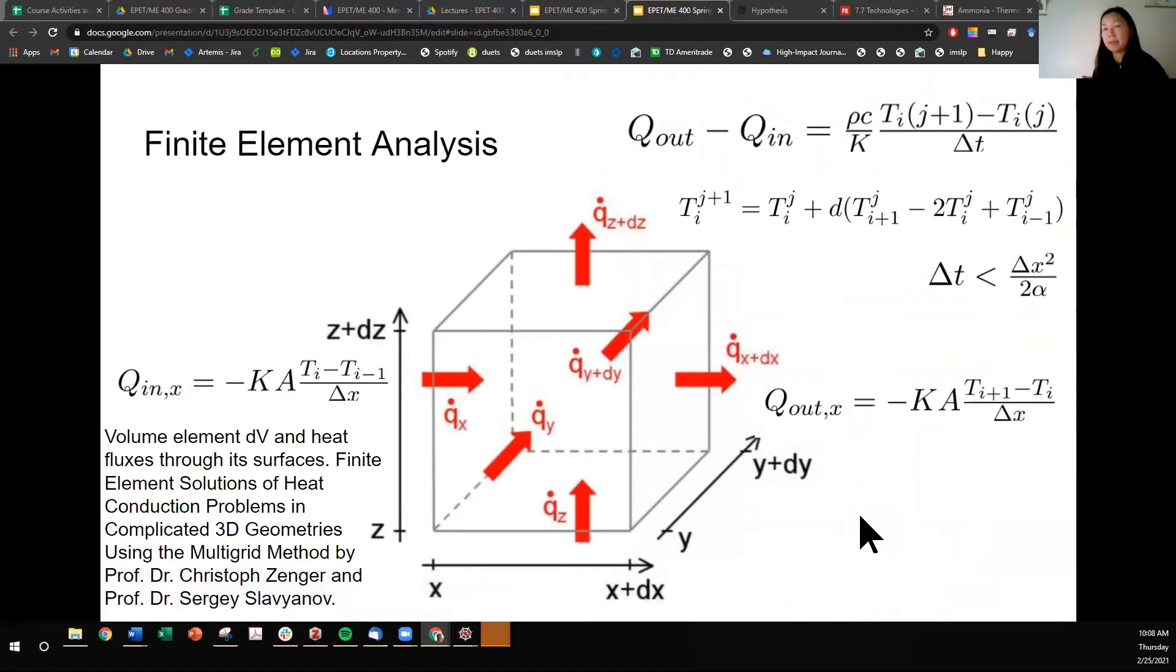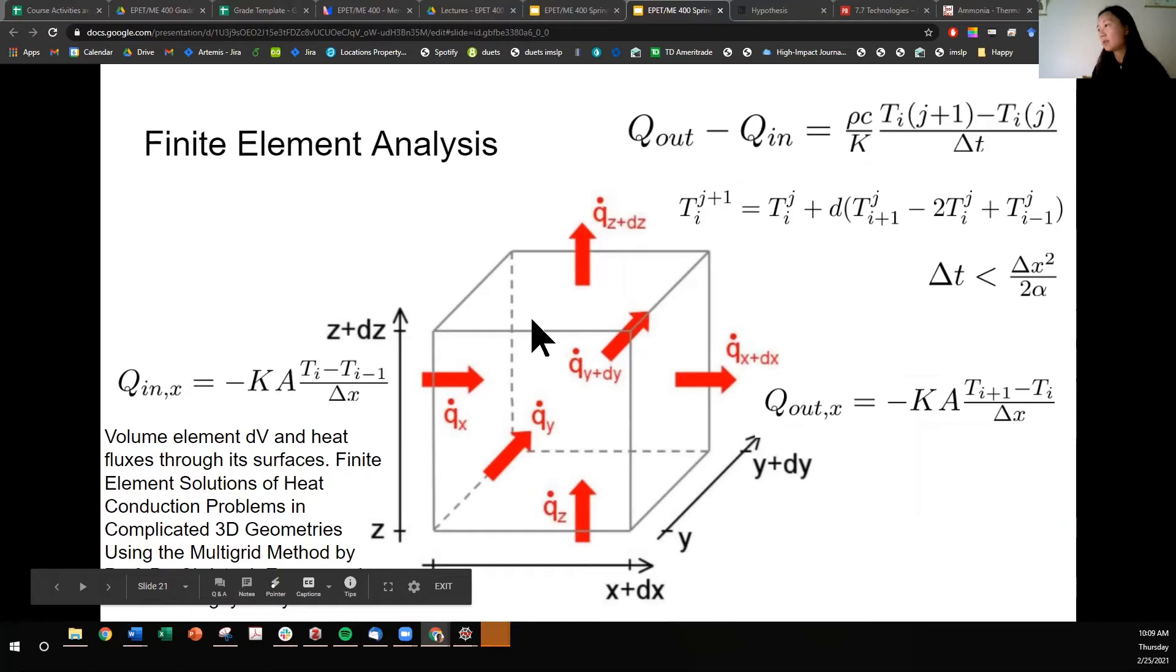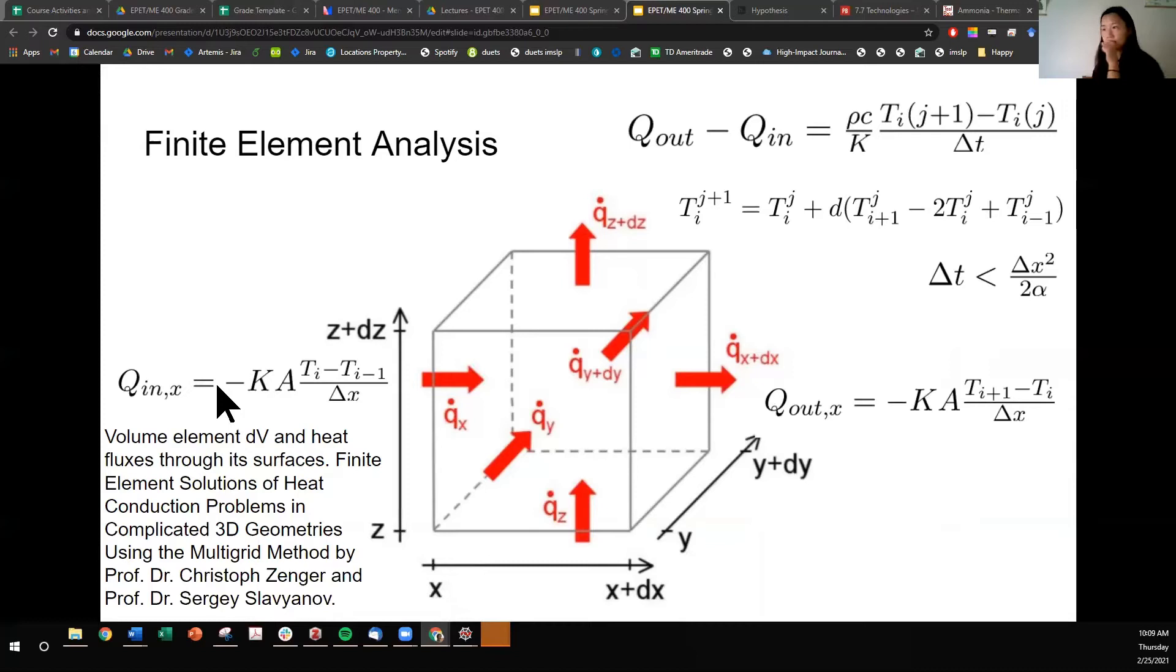We have gone over finite element analysis before in the structures chapter, so I won't go into how finite element analyses works. Instead, I'll let you know how the different volume elements interact with each other. So in the three directions, there's going to be some Q or thermal energy that is entering on one side and exits the other side.